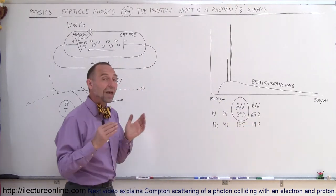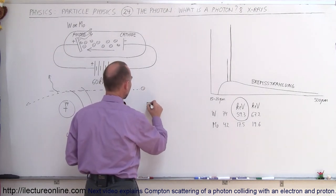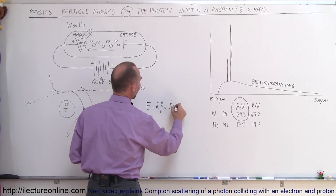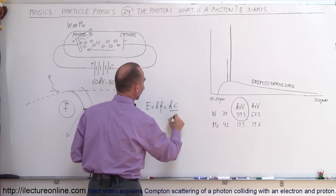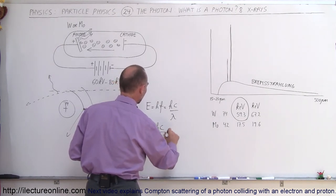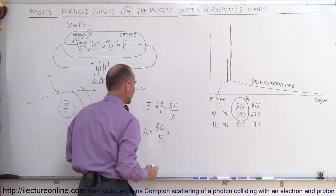To find out what wavelength of radiation that is, we can then, of course, go to this equation. We can say that the energy is equal to h times the frequency, which is h times the speed of light divided by the wavelength, or the wavelength is equal to hc divided by the energy. So, what wavelength corresponds to this particular x-ray?